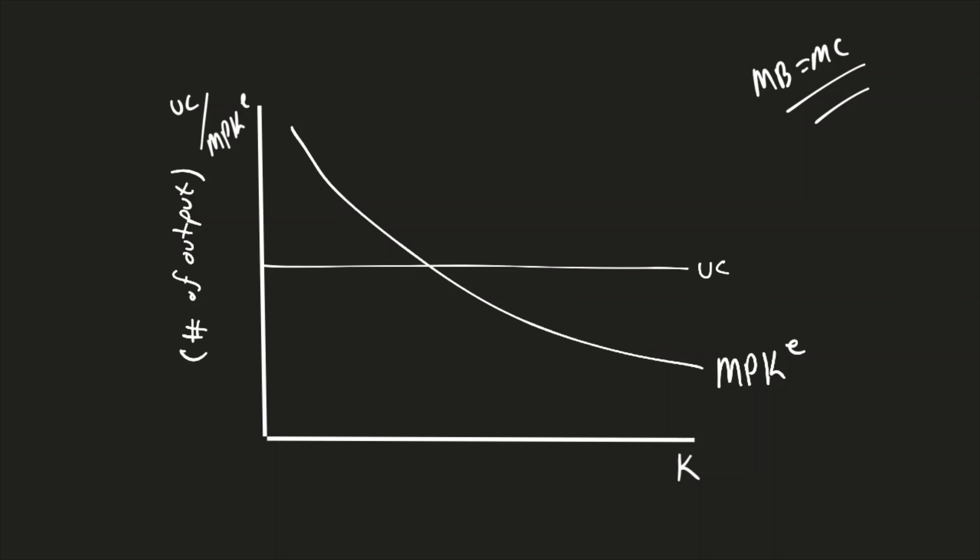This is the level of the user cost of capital. Let me fix that, make it look a little cleaner. This is going to be the user cost of capital. If there were numbers with this, you'd put the value of the user cost of capital there.